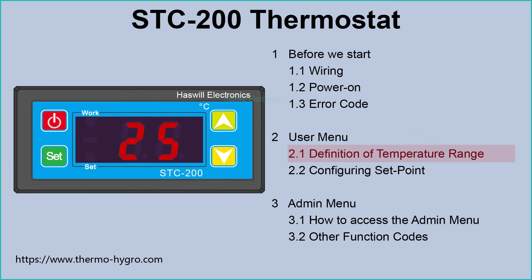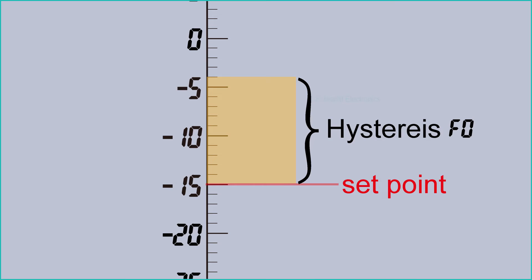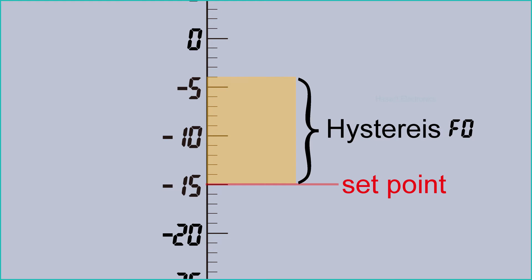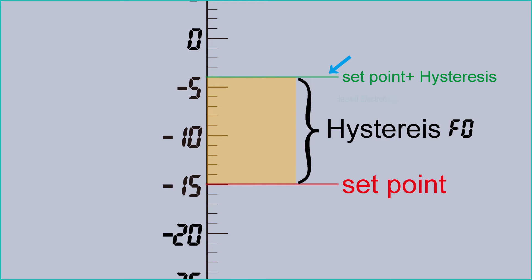Let's see how to set the target temperature range. Like other thermostats in the STC series, the STC-200 also defines the target temperature zone by configuring two parameters: set point and hysteresis. However, the difference is that the hysteresis is one-way in the STC-200 — yes, it is unidirectional. This means the lower limit of the temperature zone equals the set point; however, the upper limit equals the sum of the set point and the hysteresis value.